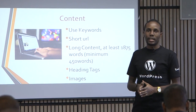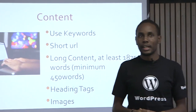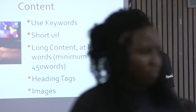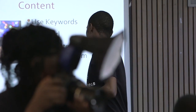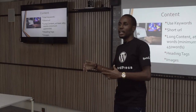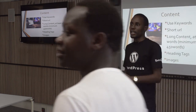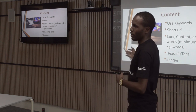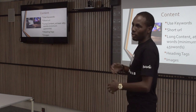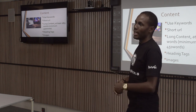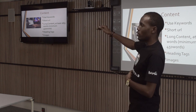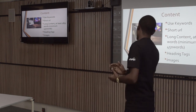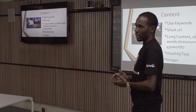Google also favors long content. Neil Patel, one of the top SEO experts, did research and found that the average article length should be around 1,875 words. When it comes to heading tags — H1, H2, H3 — that's something technical you can research further. What heading tags do is tell Google what your article is about: when bots scan your site, they go through the headings rather than all the content to determine what the article covers.